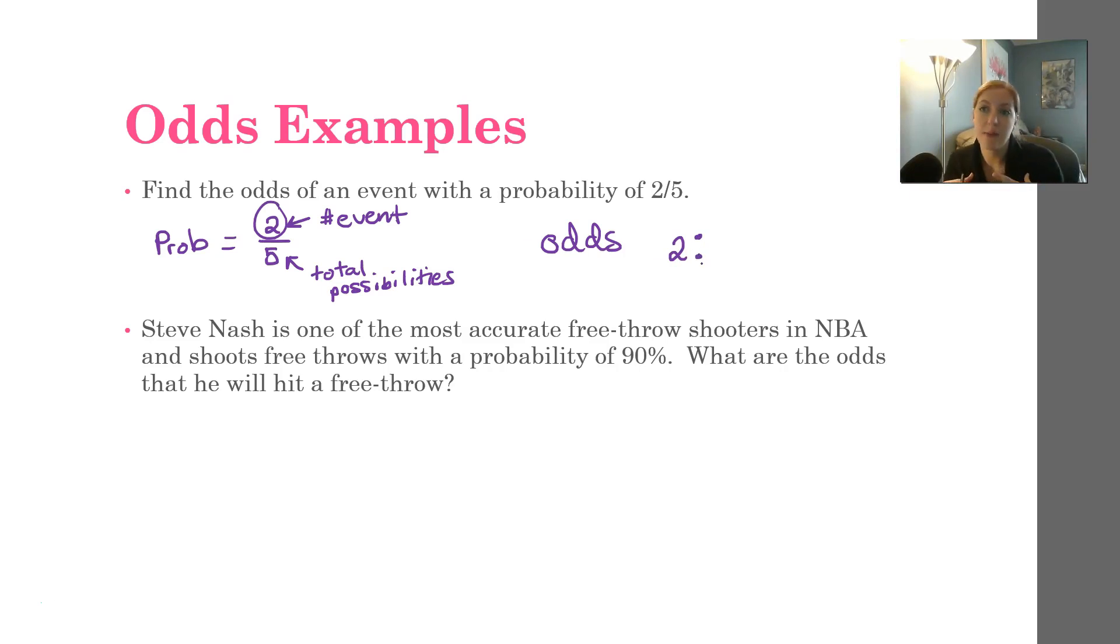Now the second number is how many ways can the event not occur. We have the total number of outcomes, and the top number is the total number of outcomes for that specific event. How are we going to figure out that last number? What did we do in the last example? We took the total, right, which is 5, and we just subtracted off the outcomes that fit that event. So 5 minus 2 is 3. So for every 2 wins, there's 3 losses. And notice that it does add up to the total. 2 plus 3 gives me 5, which is great.